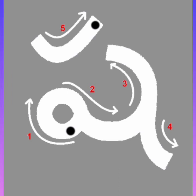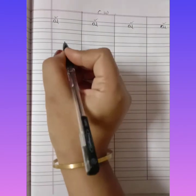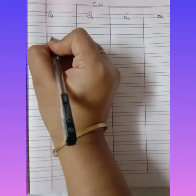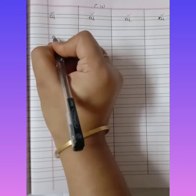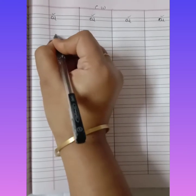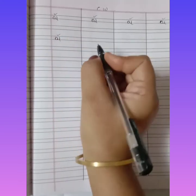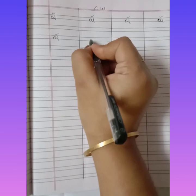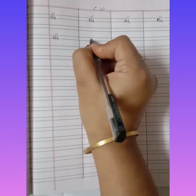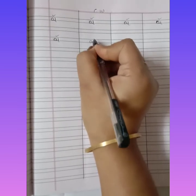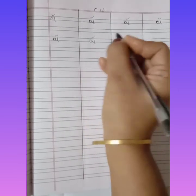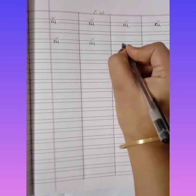Now, see carefully on the screen how to write the letter sha with the help of arrow marks. See, children, how I am writing the letter sha. This letter is sha. See carefully, children — read and write. Sha — usha — dawn.